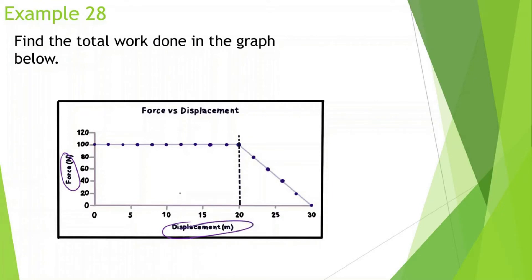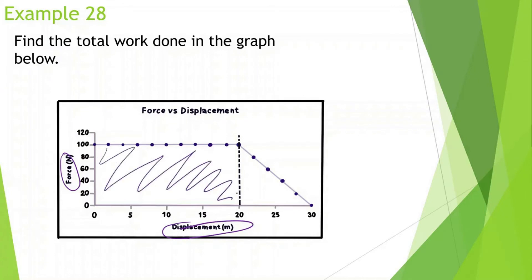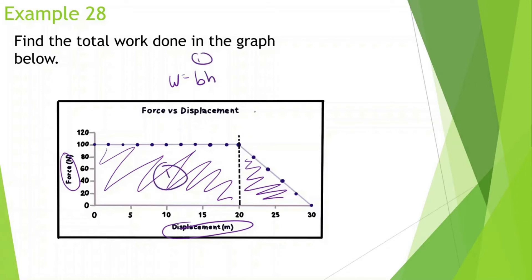What we should know about a force-versus-position graph is the area under the curve is going to be equal to the work being done. Force times distance gives us work. So work is going to be equal to the base times height of the first section, plus one-half base times height of the second section.